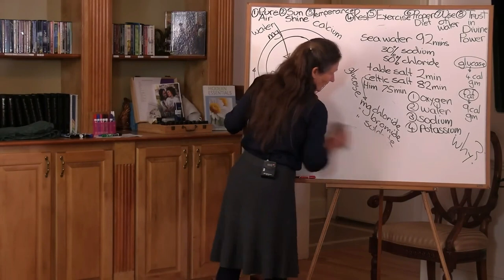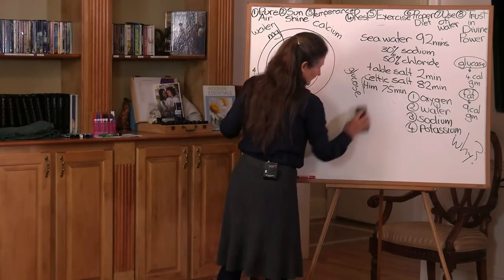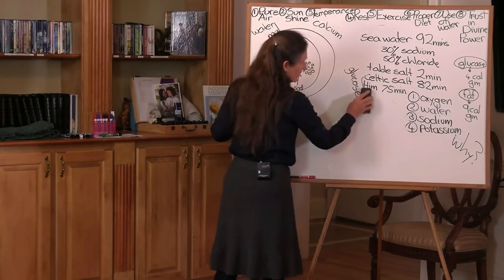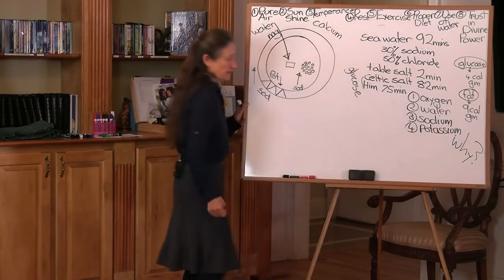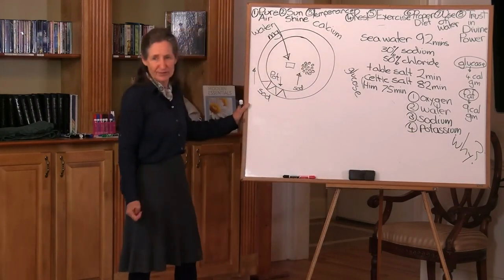So as you can see water is very important but so is the salt and again the potassium is found in all your fresh fruits and vegetables.